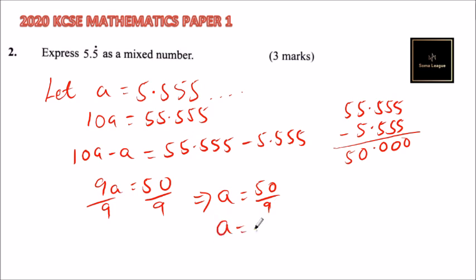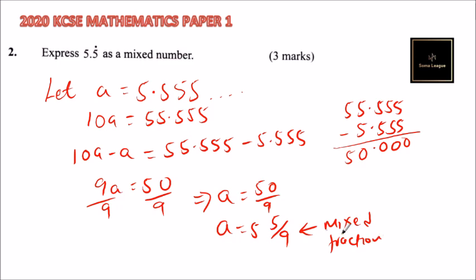When you divide 50 by 9, A equals 5 and 5 over 9. So this is a mixed fraction — a mixed fraction means we have a whole number and a fraction. That is what you call a mixed number. So that's how you do that question.